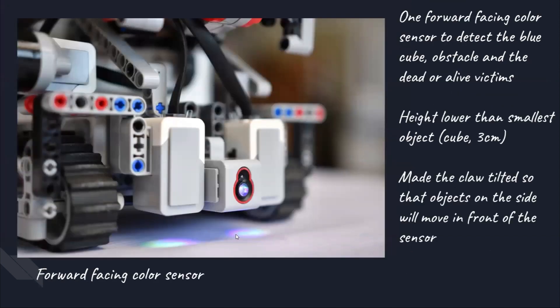Now, we will be talking about the forward-facing colour sensor. As you can see from the picture, there is a forward-facing colour sensor to detect the rescue kit and obstacles on the line, and the dead or alive victims in the evacuation zone. One of the considerations was to make sure that the height of the colour sensor had to be smaller than the smallest object, which is the 3cm cube. Also, since the sensor can only detect directly in front of it, and the cubes and balls may be off to the side, we made sure that the claw was tilted, so that the items to be collected were moved in front of the color sensor.